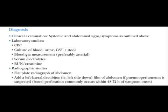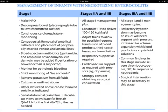A left lateral decubitus film of the abdomen is taken if pneumoperitoneum is suspected. For Stage 1 management: make the patient NPO, decompress the bowel with a Replogle tube for intermittent suction, continuous cardiorespiratory monitoring, and consider removal or replacement of umbilical catheters with peripherally inserted venous lines. Start broad-spectrum antibiotics such as gentamicin and ampicillin.